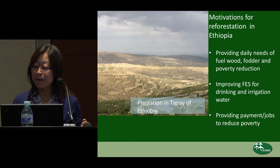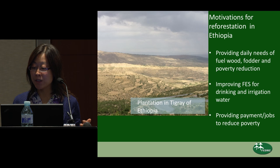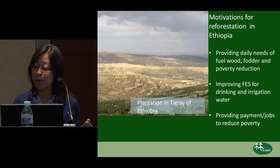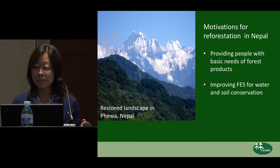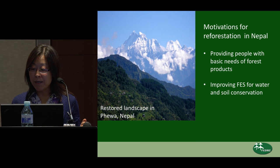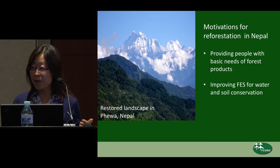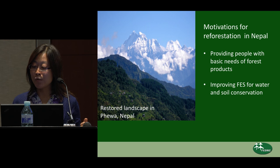In Ethiopia, the main actors of landscape restoration and rehabilitation are communities, the central government, and development partners such as NGOs and donors. Motivations for reforestation are both the economic benefits of meeting households' daily needs for food and fuelwood, and the ecological benefits of water and soil conservation to provide clean water for drinking and irrigation. In Nepal, the main actors are communities and the central government, and the motivation for restoration is to meet local people's needs for forest products for house building, fuel wood, and to control floods.